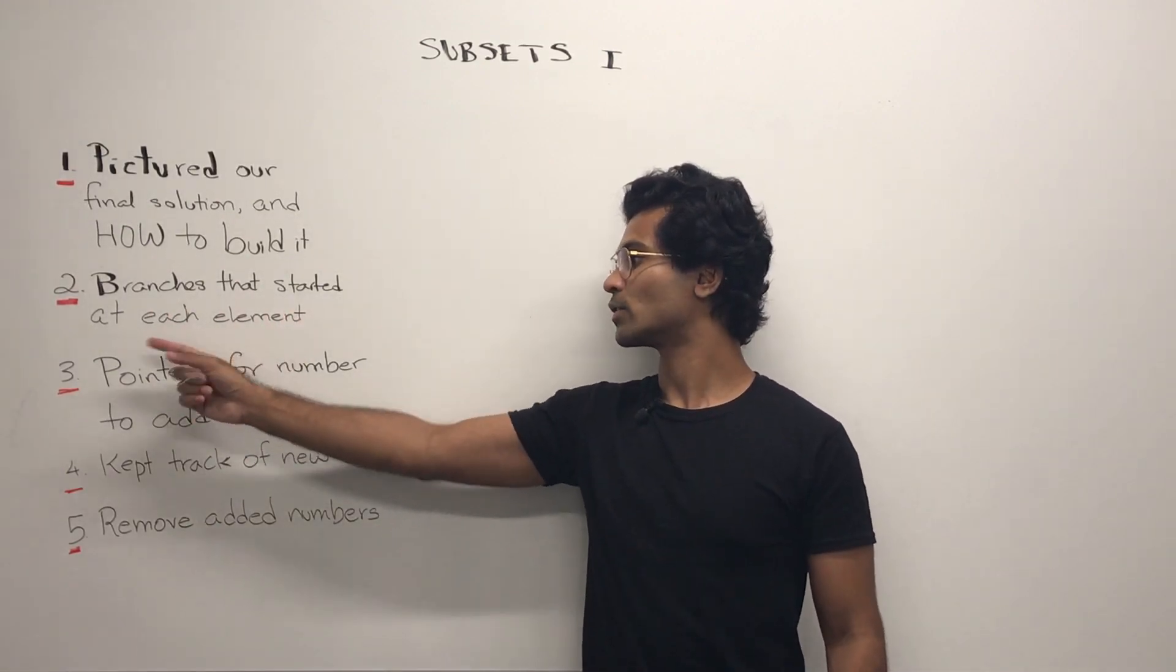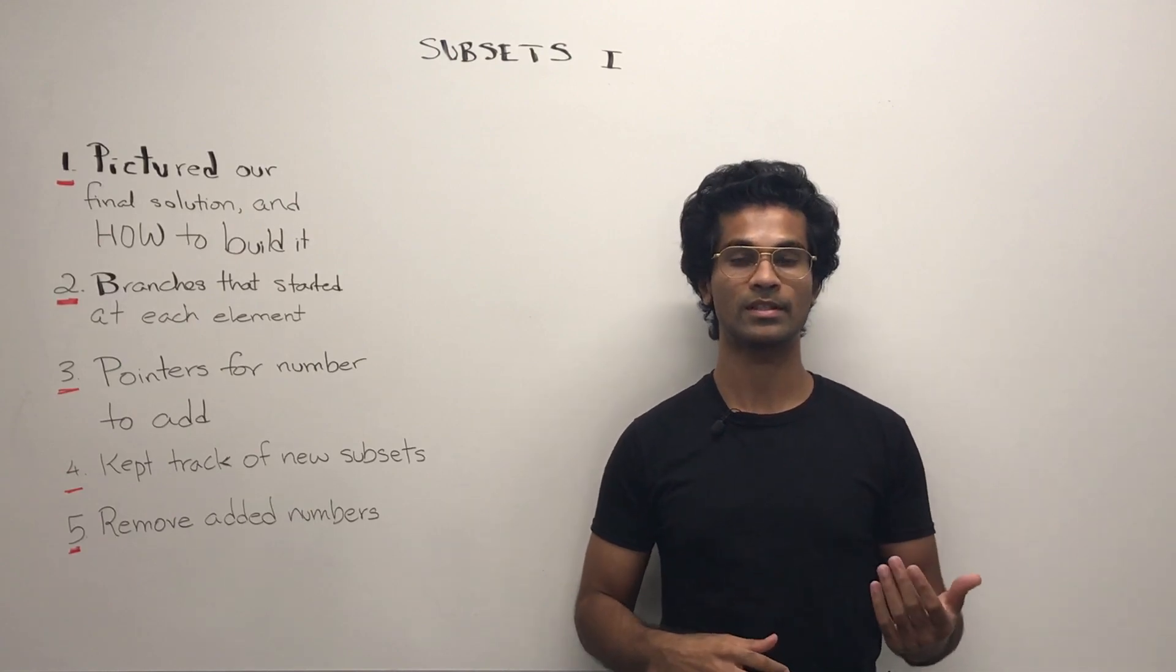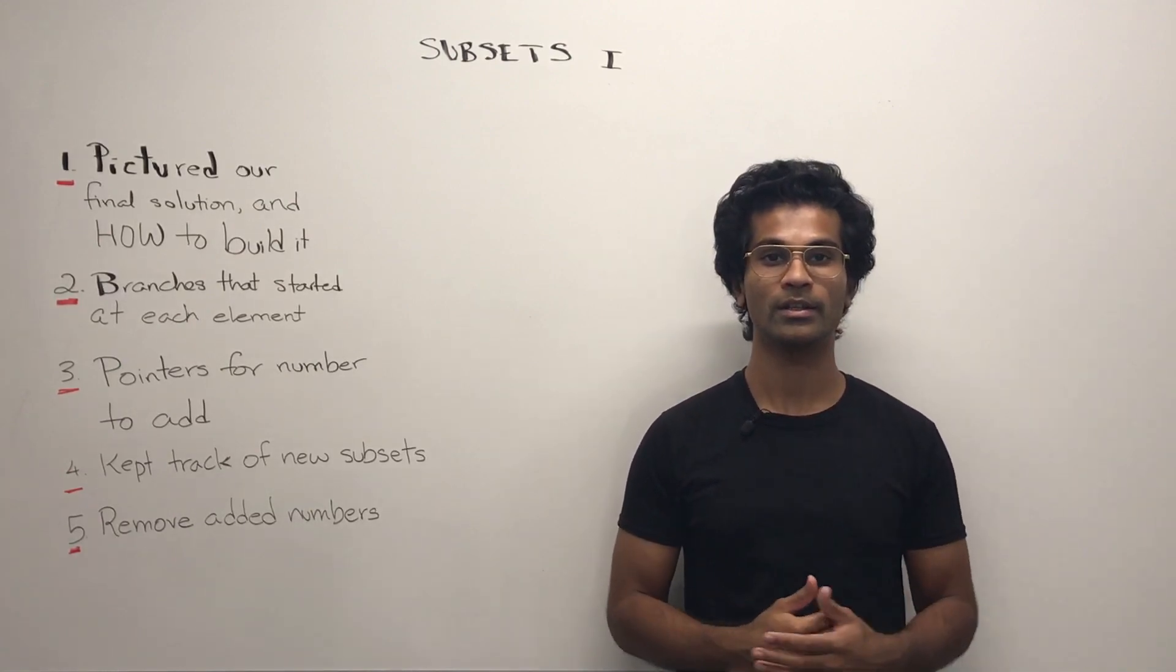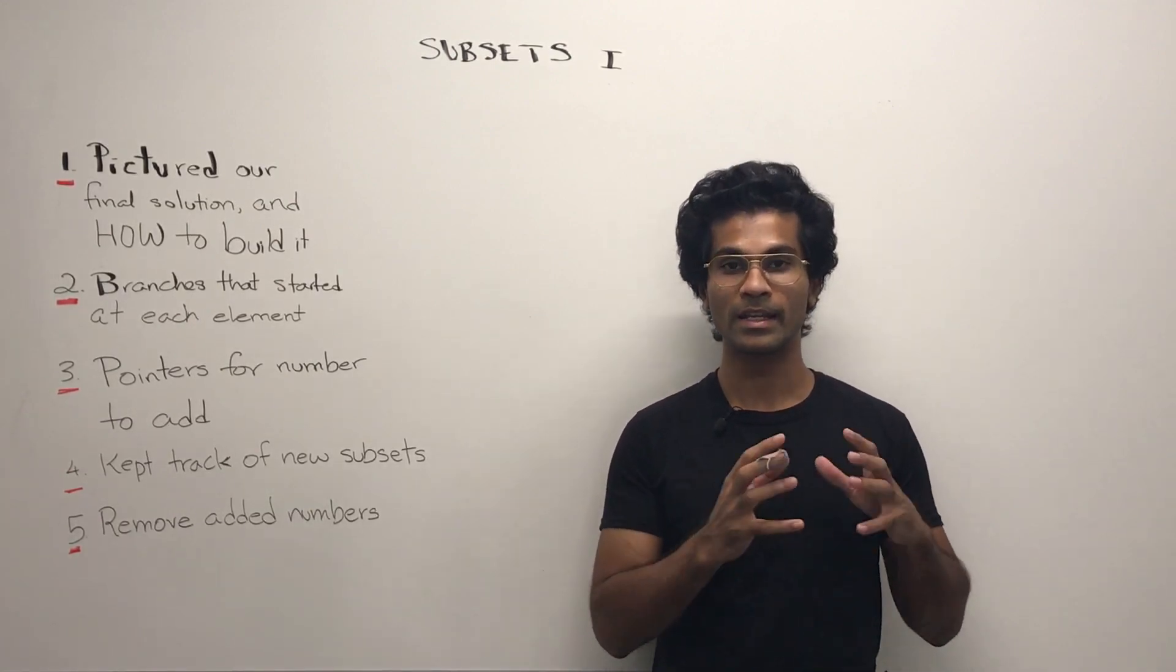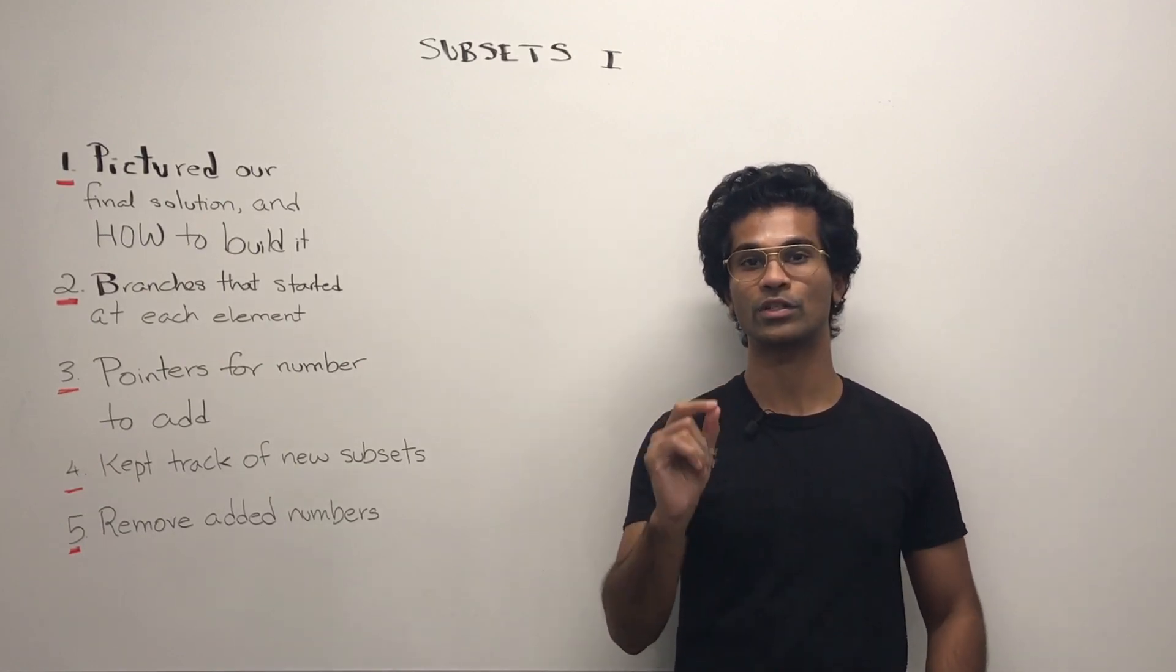Next, the branches that started at each element. This refers to the elements that are starting at one or two or three at each particular branch that started out with that one as the first element.